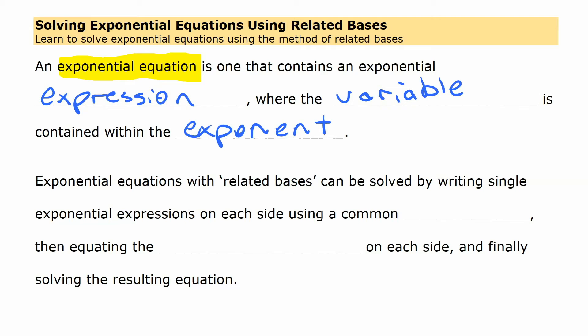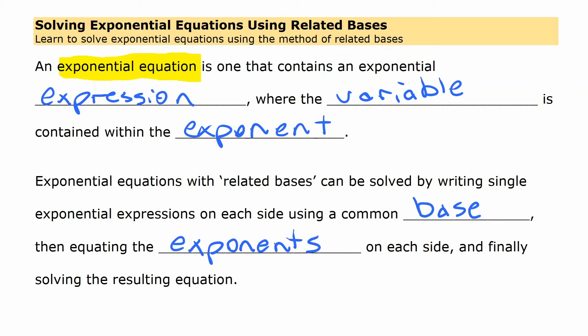Exponential equations with related bases are ones we're going to look at here, and those you can solve in a fairly simple way just by writing the expression on each side of the equation using a common base — the same base. Once you have two expressions where the bases are the same, then the expressions in the exponents have to also be equivalent.